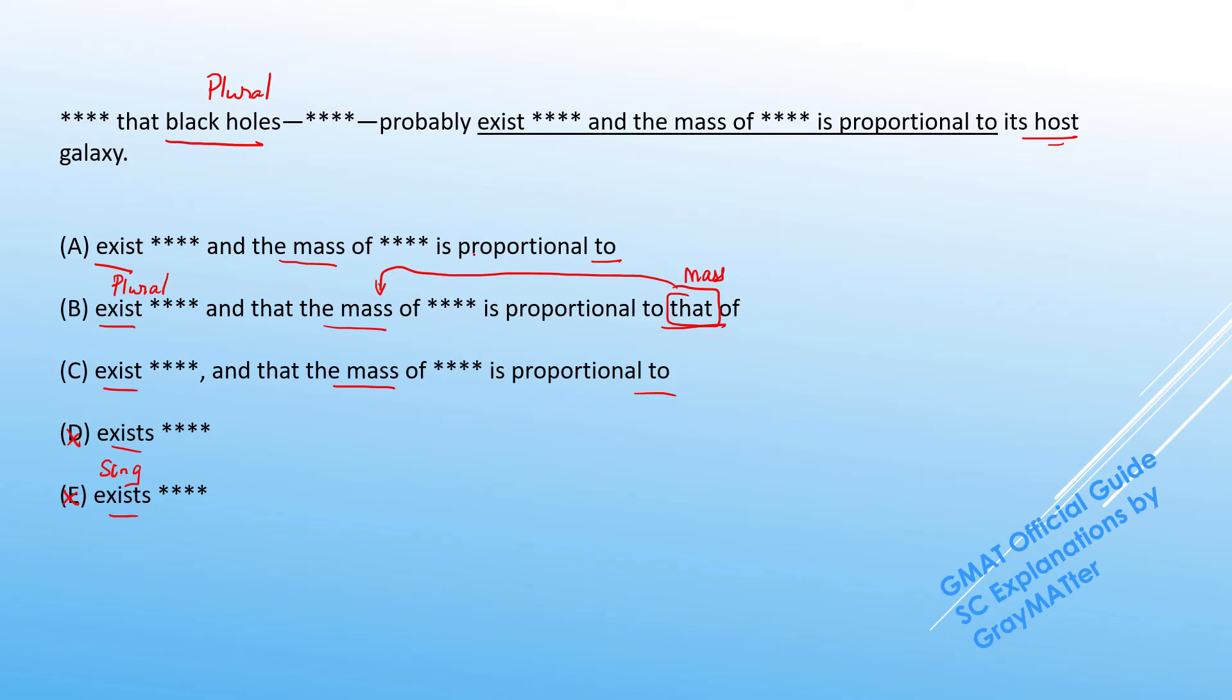So when you logically think about it, is the mass of the black hole proportional to the host galaxy itself or the mass of the black hole proportional to the mass of the host galaxy? Obviously the latter is the correct version. A and C go off. B is the right answer.